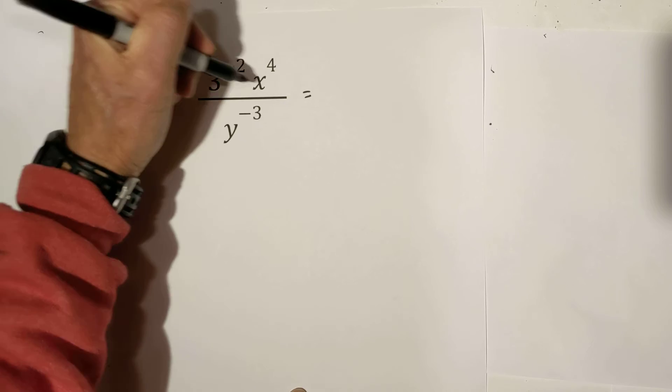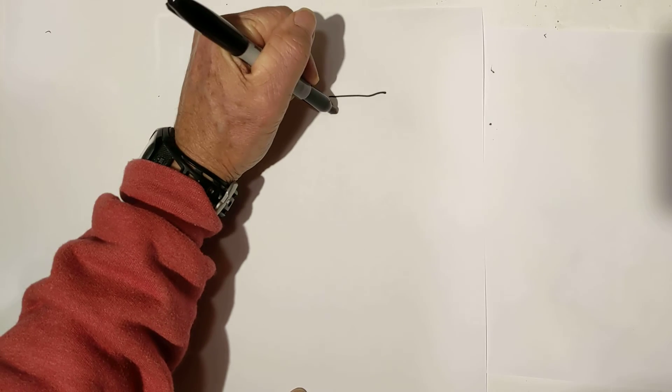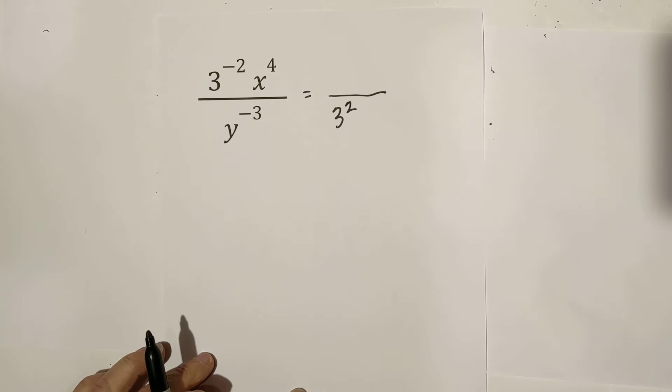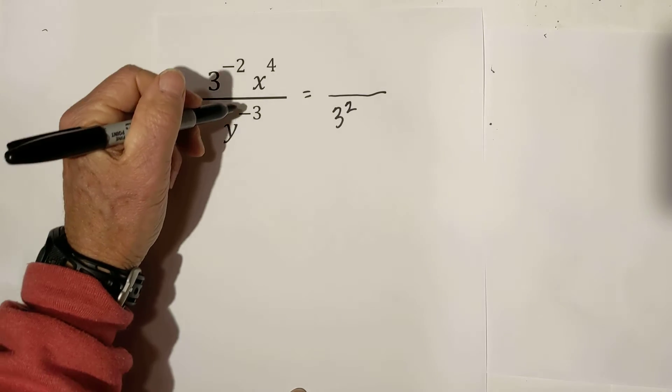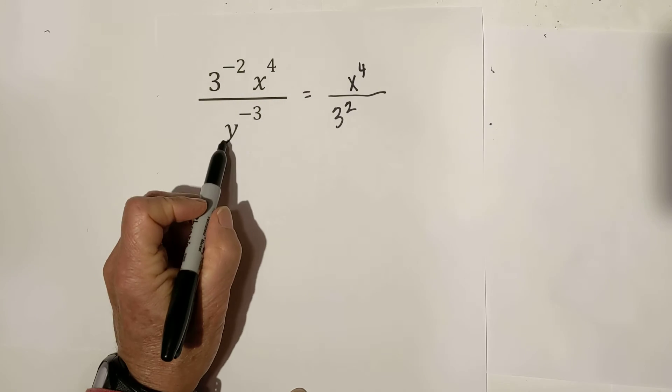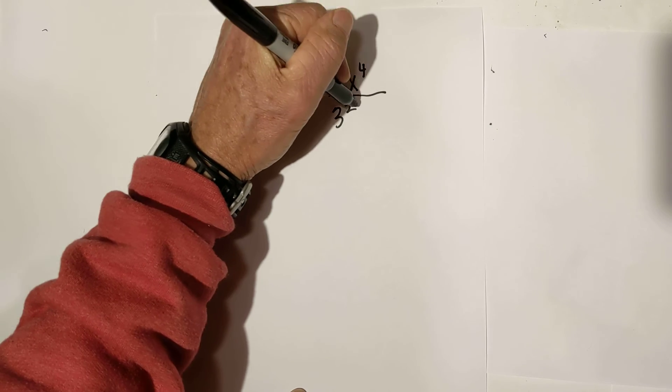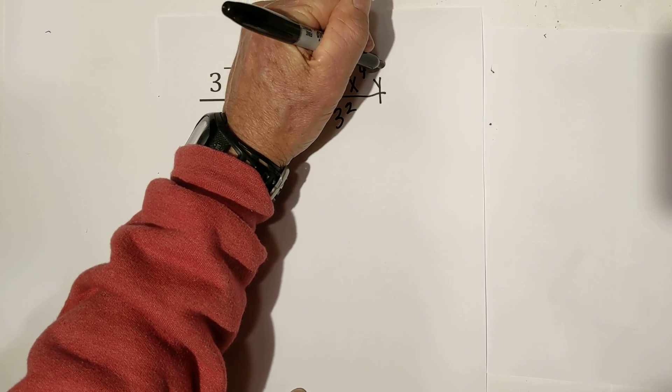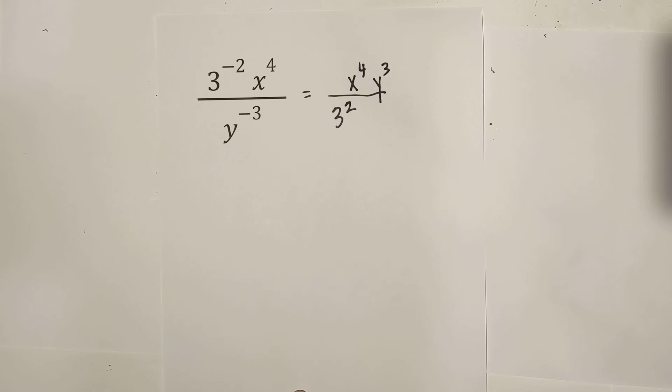So we have 3 to the negative 2. That will become 3 squared. And then we have x to the 4th. We're not going to do anything with that. And then this y to the negative 3 needs to be moved to the top. So, that's what we have.